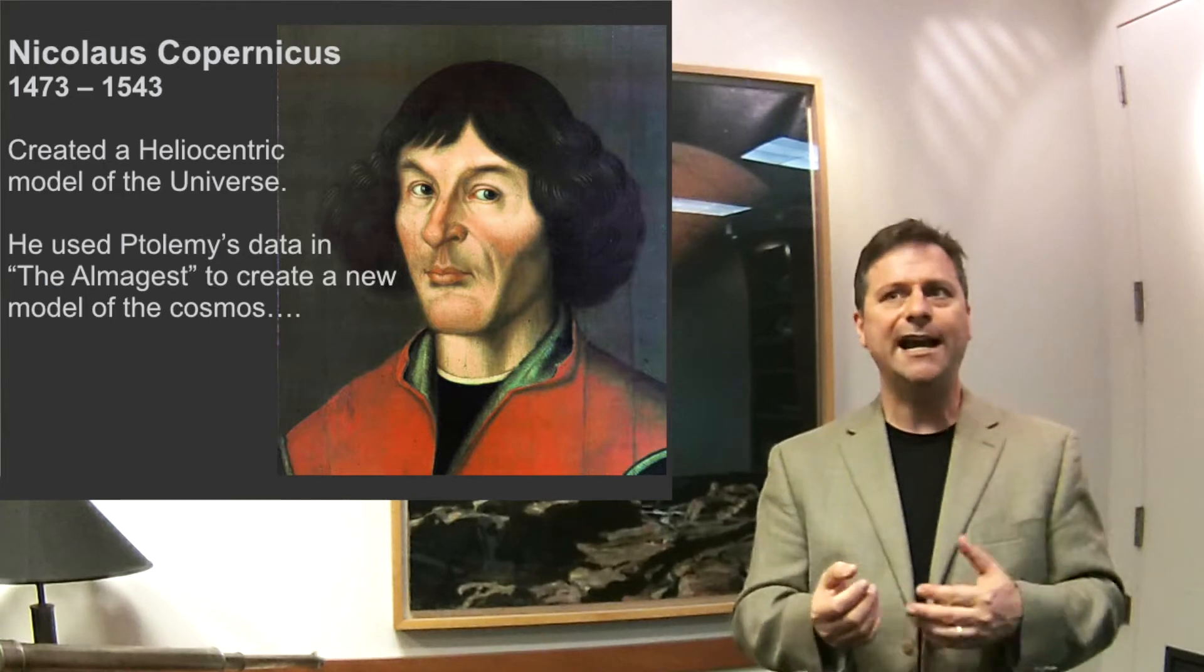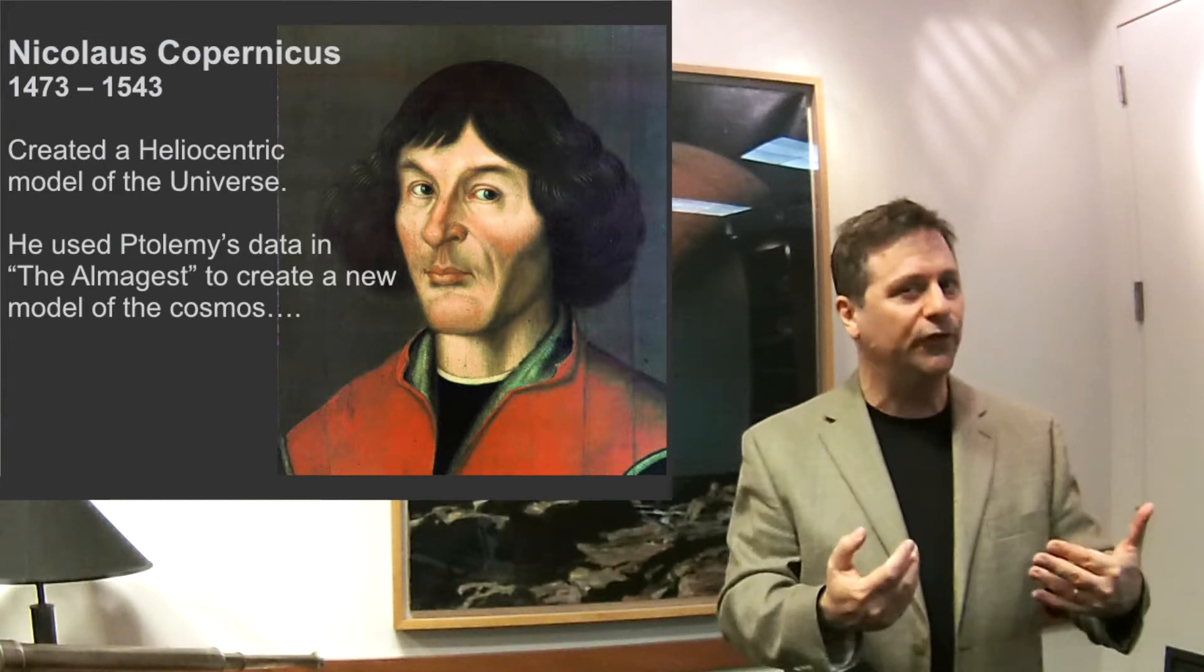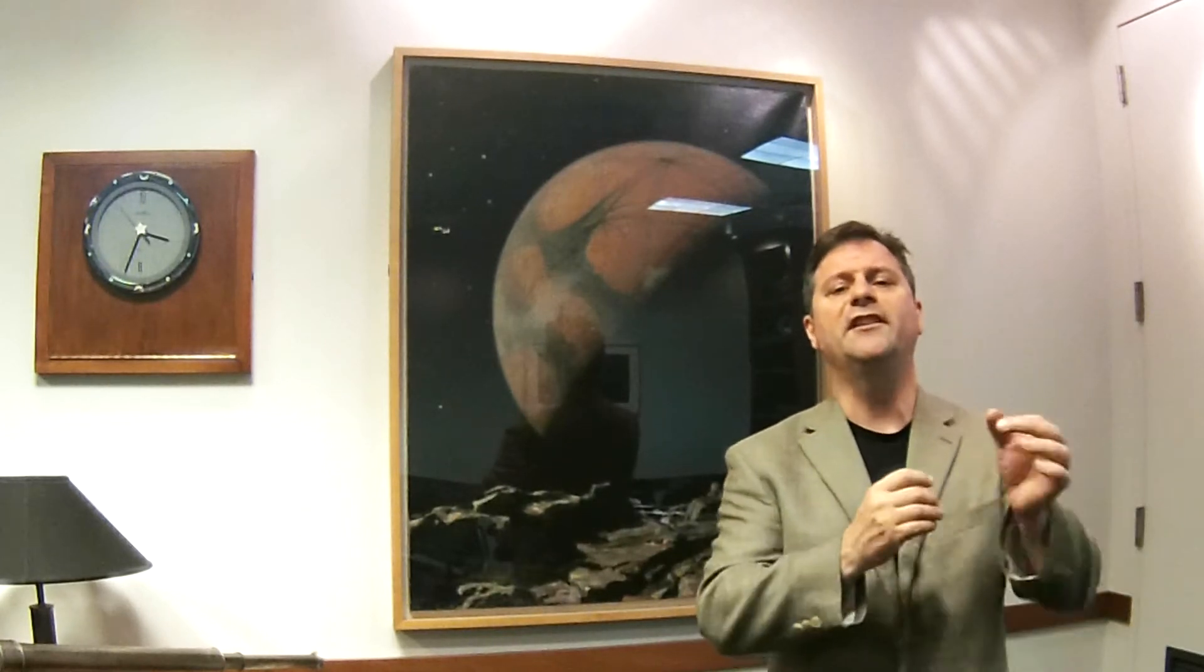And his model was kind of a geo-heliocentric kludge. Now, typically when you talk about this particular time, you say, oh, the Copernican revolution, this is the time. Copernicus comes along and says, sun at the center, and here we go. This is now the time for revolutions.